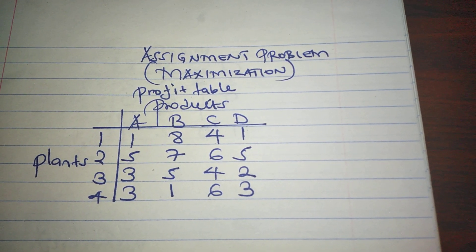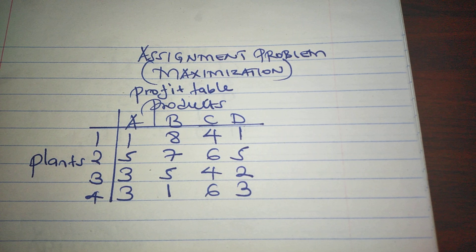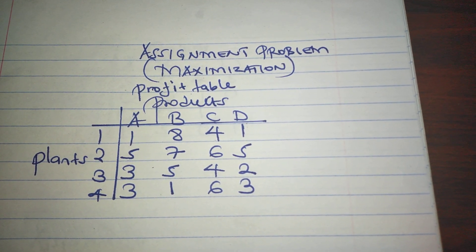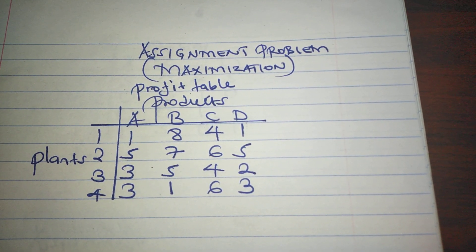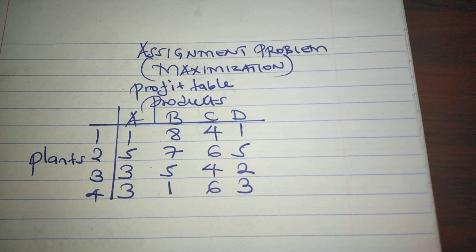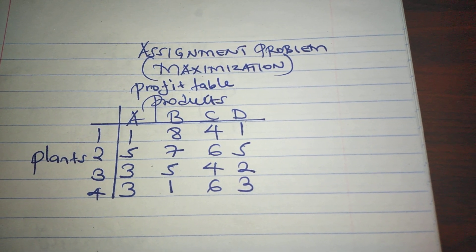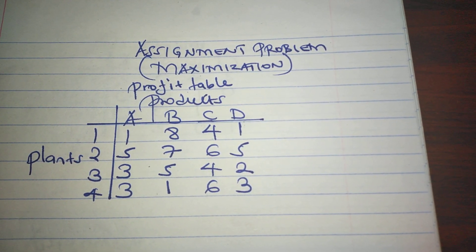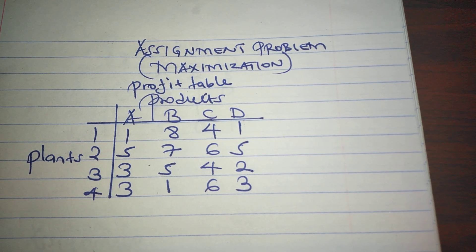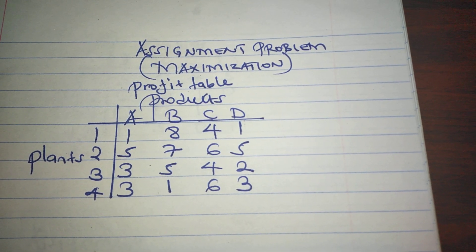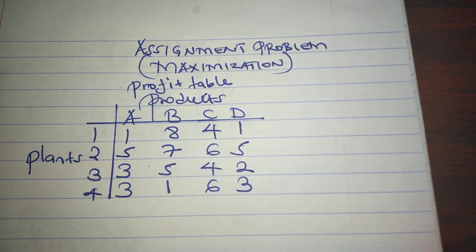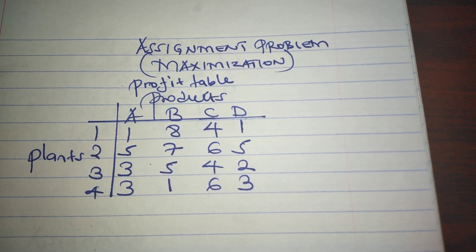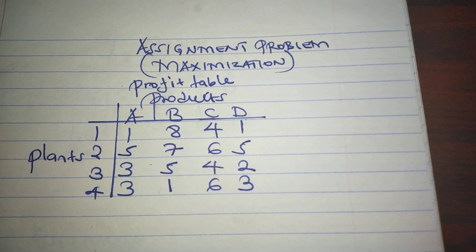Although the assignment method is primarily a minimization technique, it can be used to solve problems where maximization is required. In order to use maximization, each value in the initial table is subtracted from the largest value. This reverses the order of magnitude. The solution then proceeds as though you're solving a minimization problem.